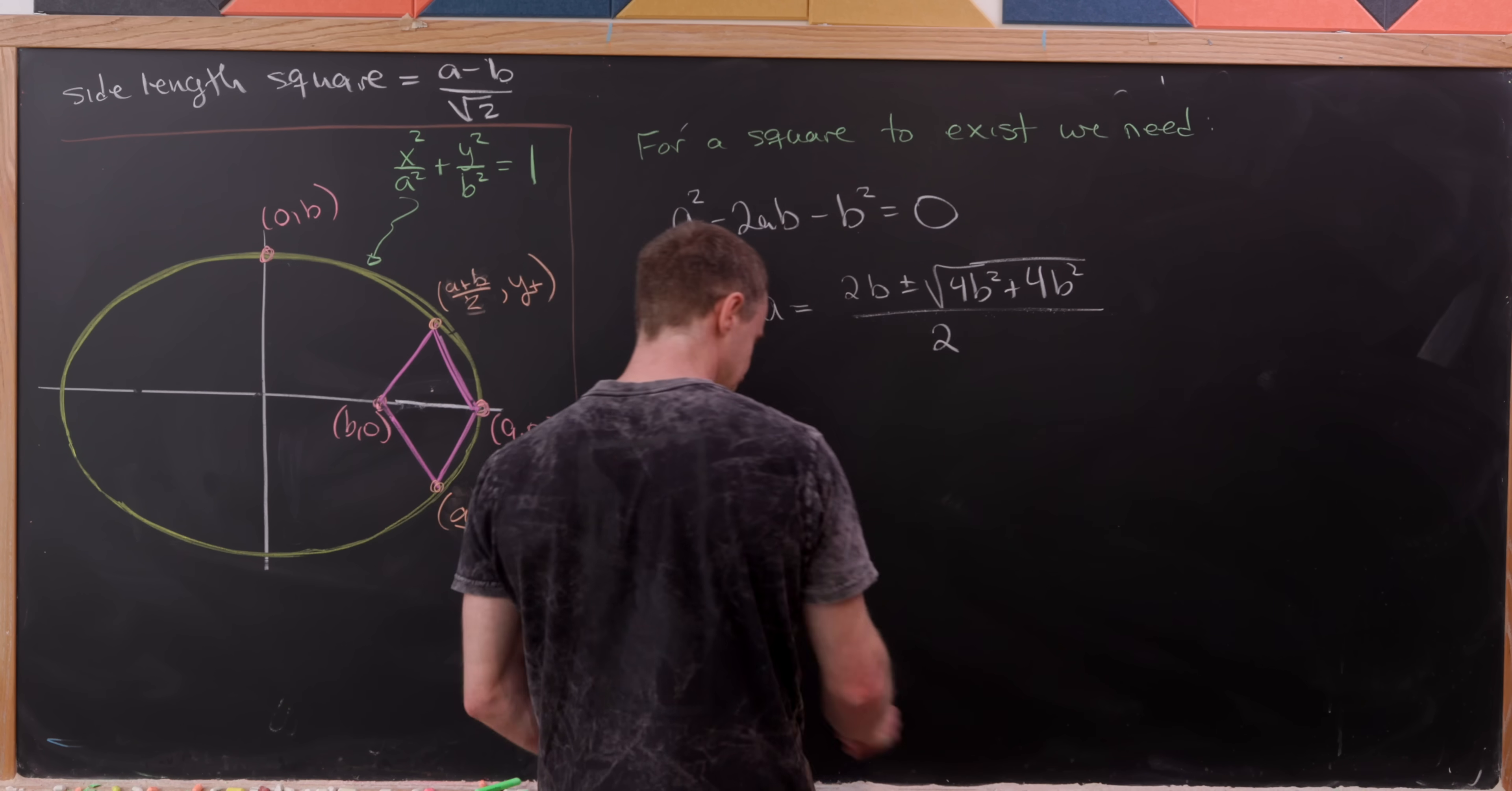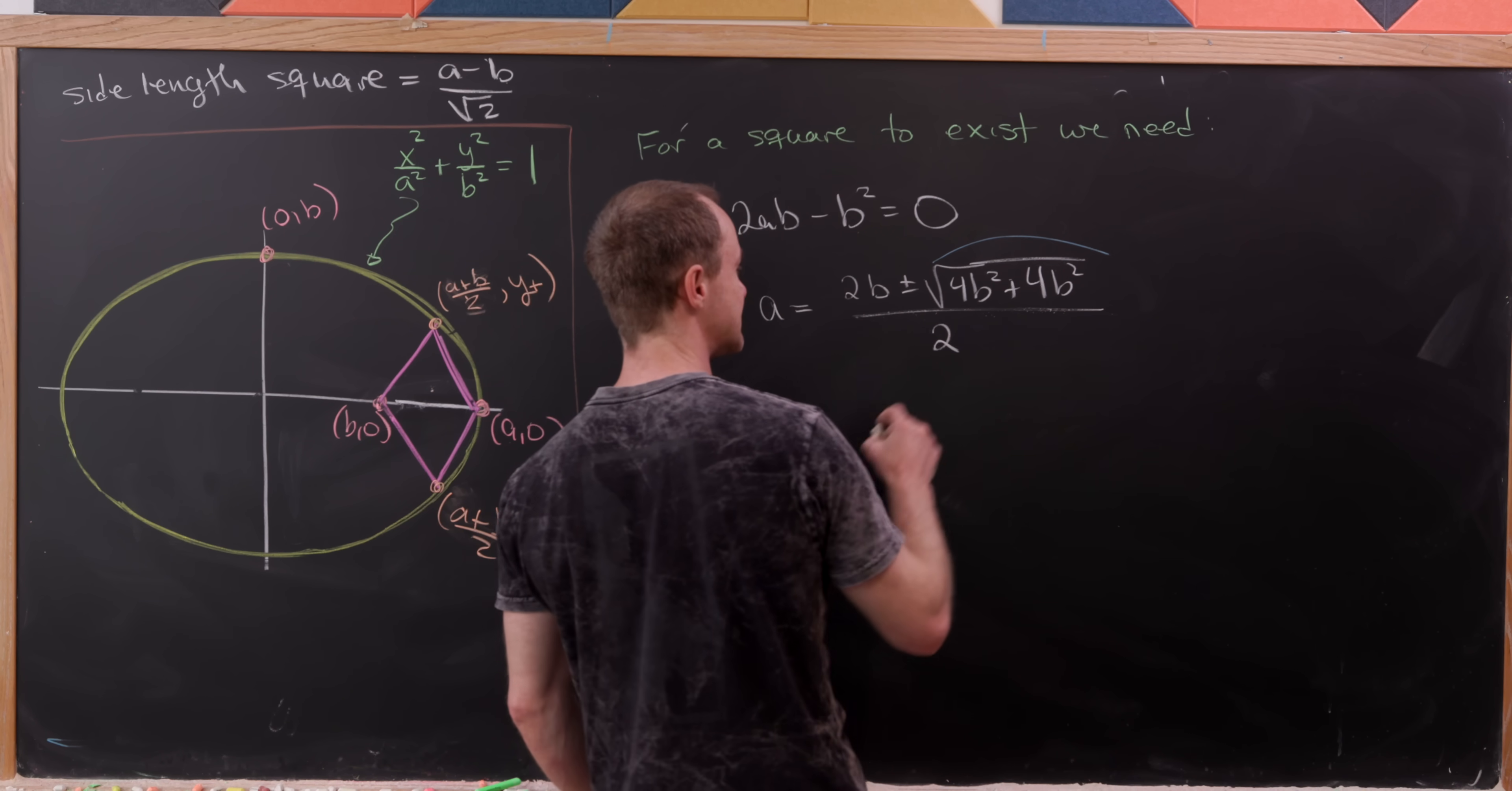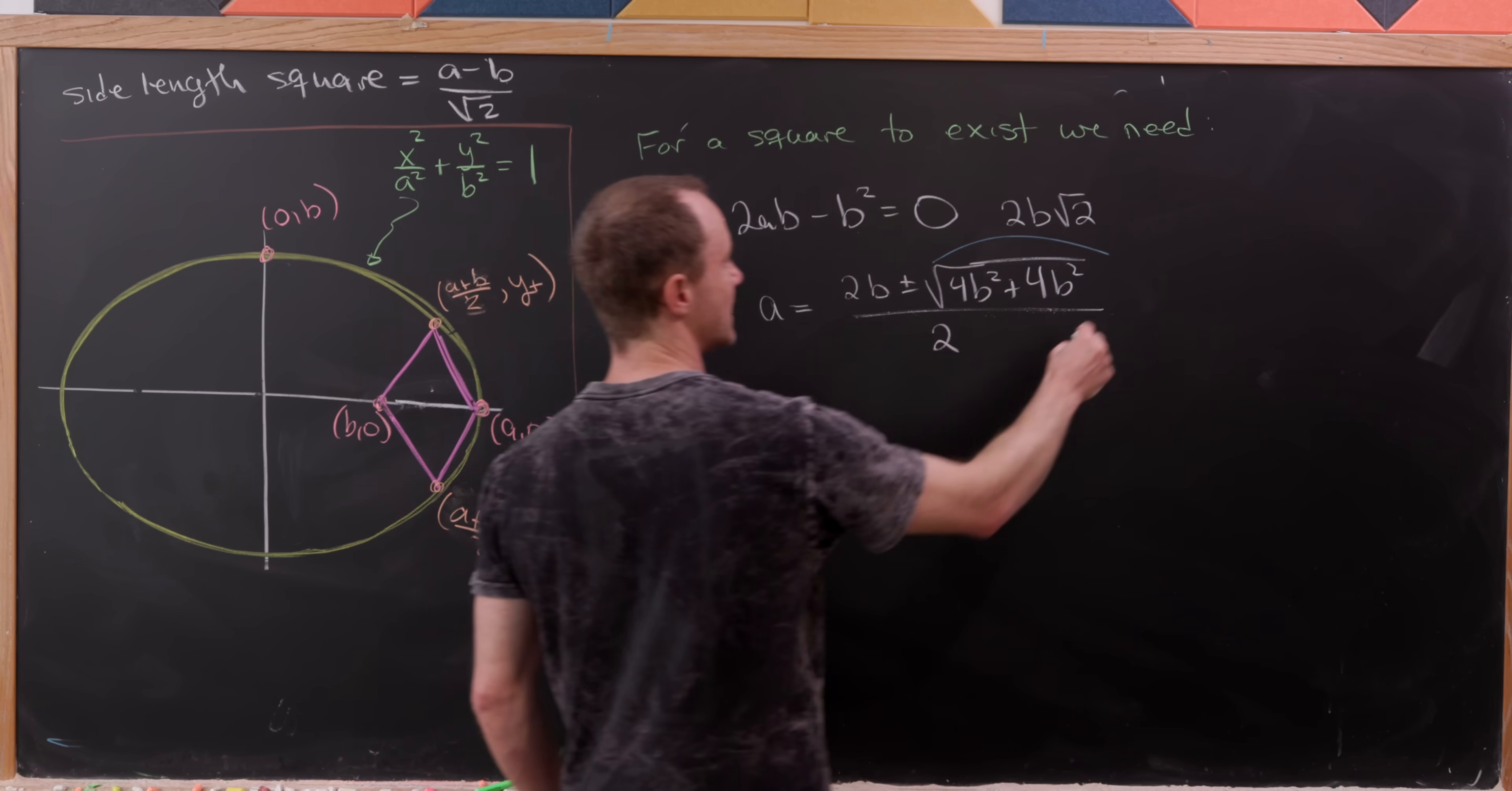But now what does this turn into? Well, let's observe that this right here will be 8b², which will be turned into 2b√2. So in the end, what do we have?